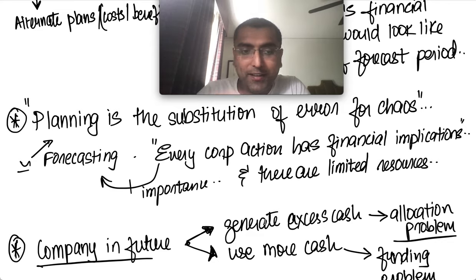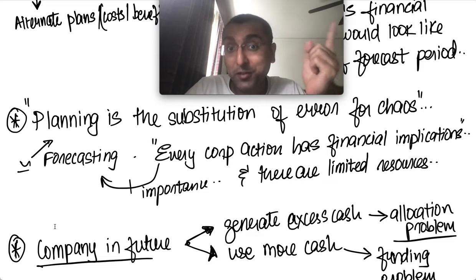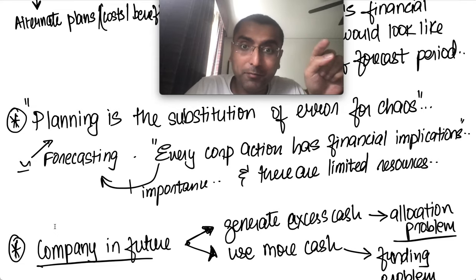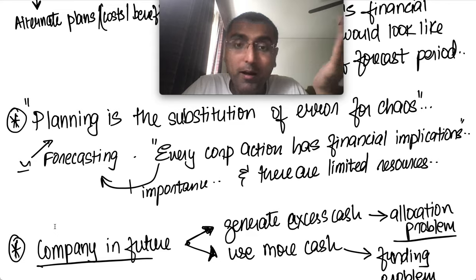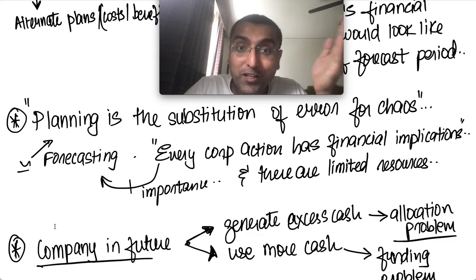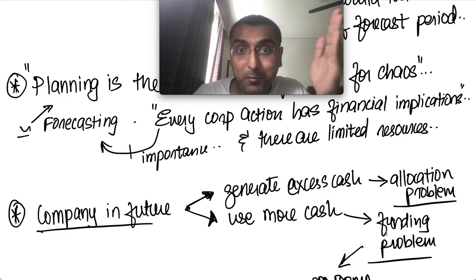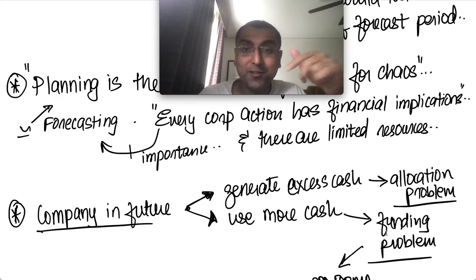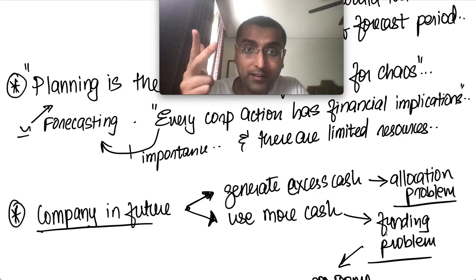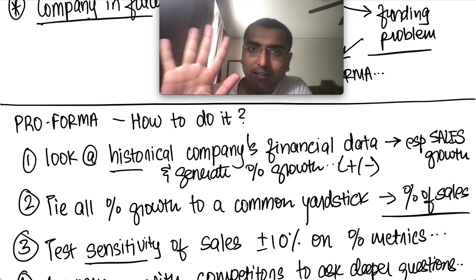There are two possibilities for a company's finances in the future. It could be doing really well, generating extra cash — but then you have an allocation problem. If you don't allocate money well, your return on capital employed suffers. The second case is when you need more cash than you're generating — that's a funding problem. Pro forma statements are essential in both scenarios.